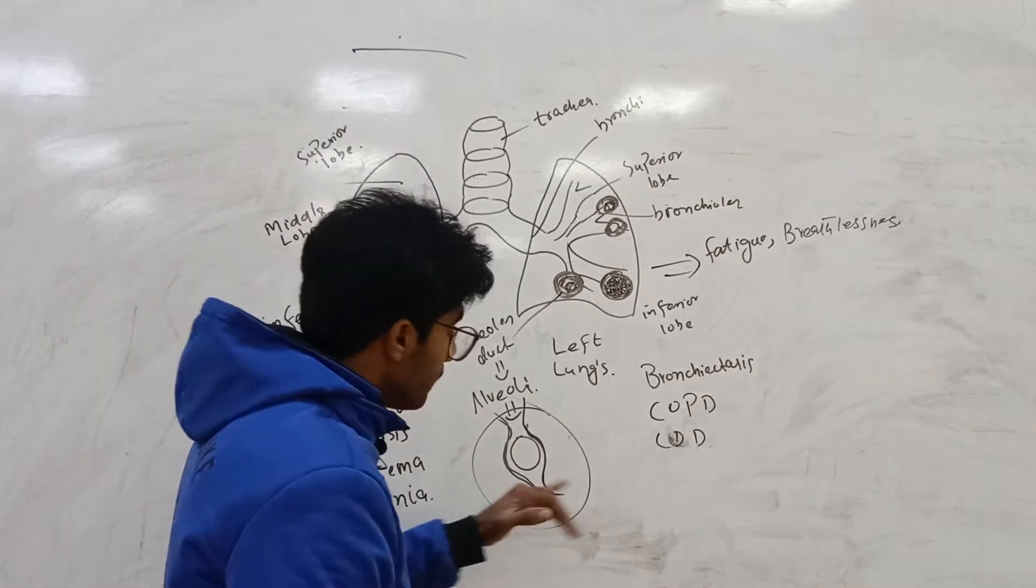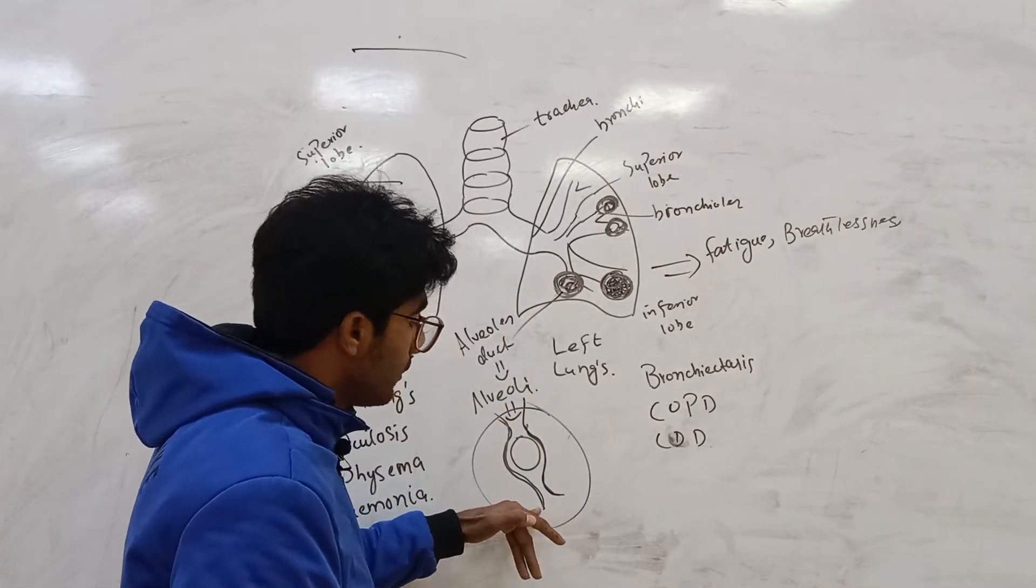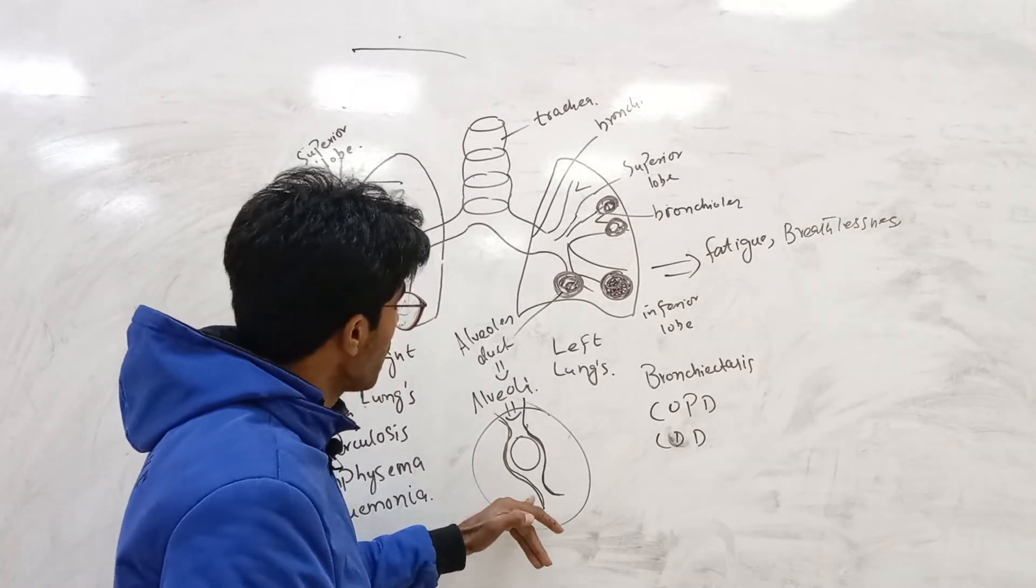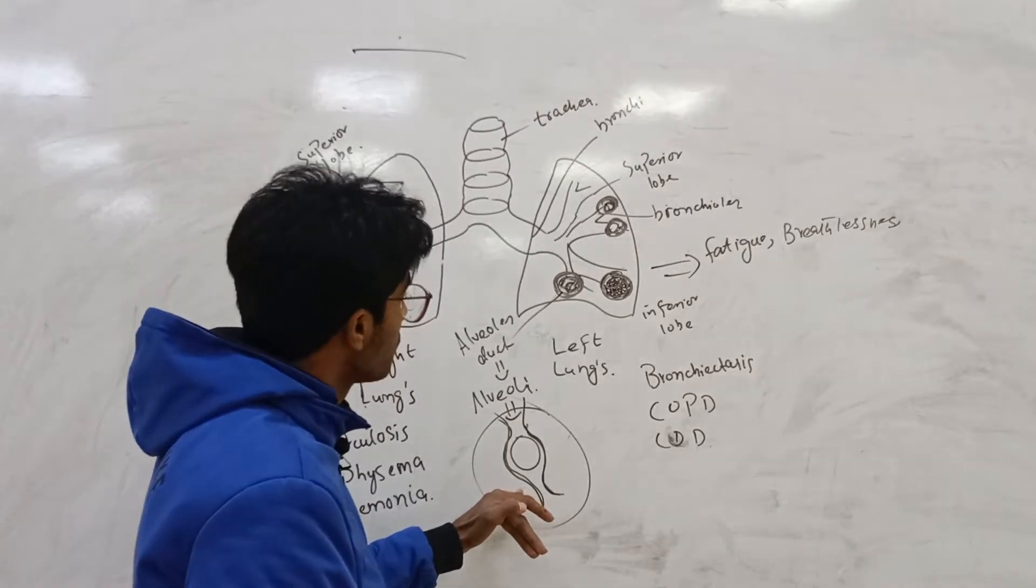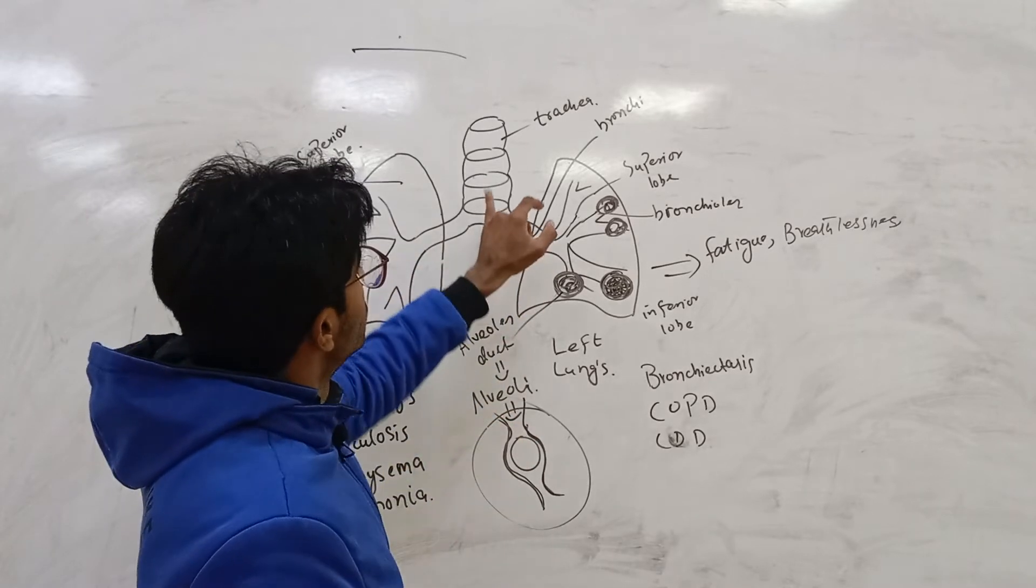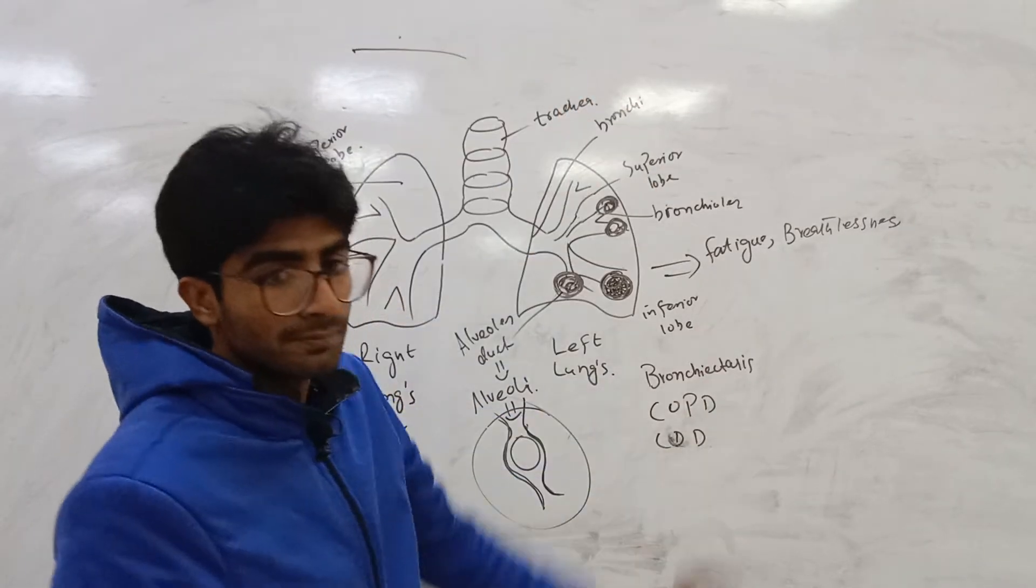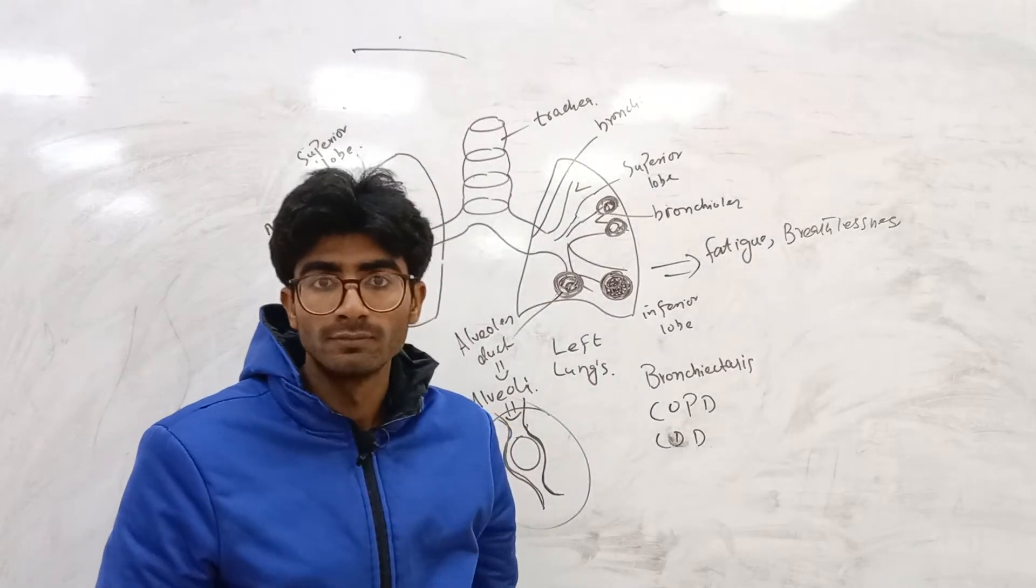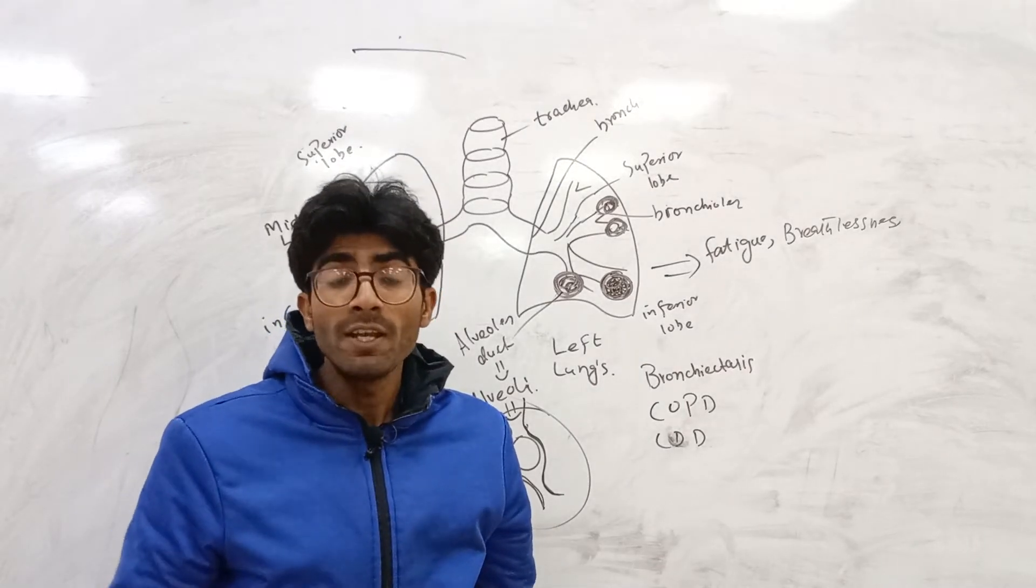From blood there is carbon dioxide. Carbon dioxide passes from the alveoli and goes to the trachea and to the mouth.